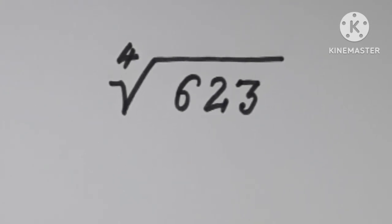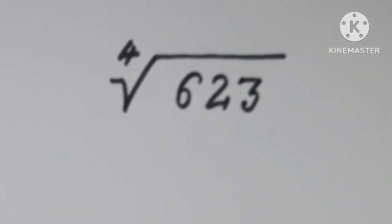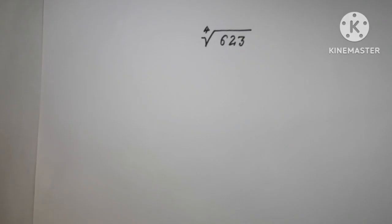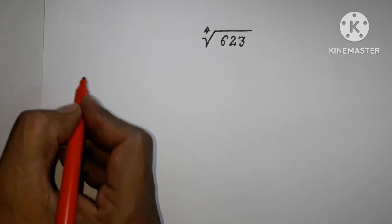Welcome back to Triple X Learning. Today we have to find the fourth root of 623. How can we find it? Before going to solve, I want to recall one formula: (1+x)^n.